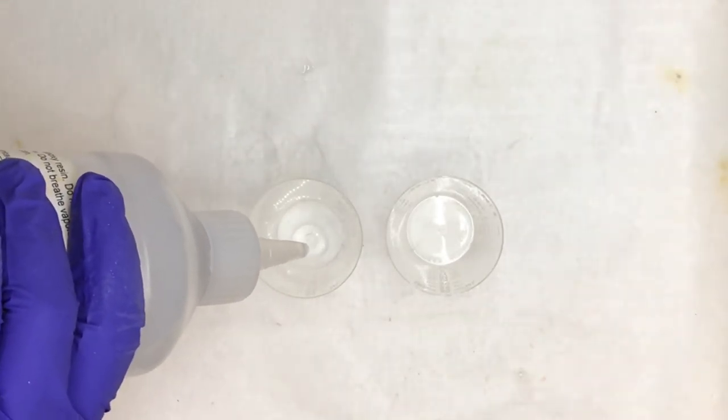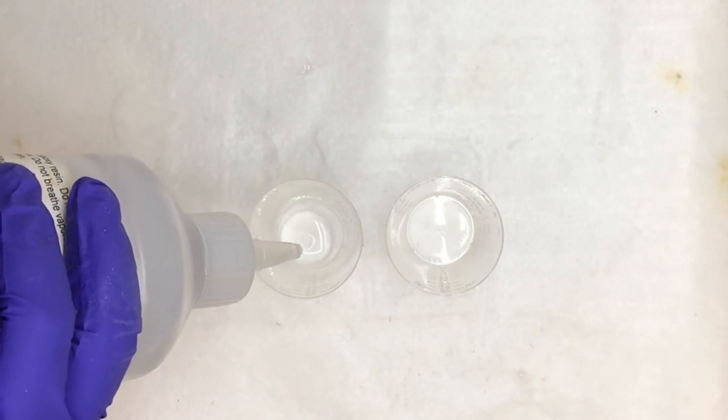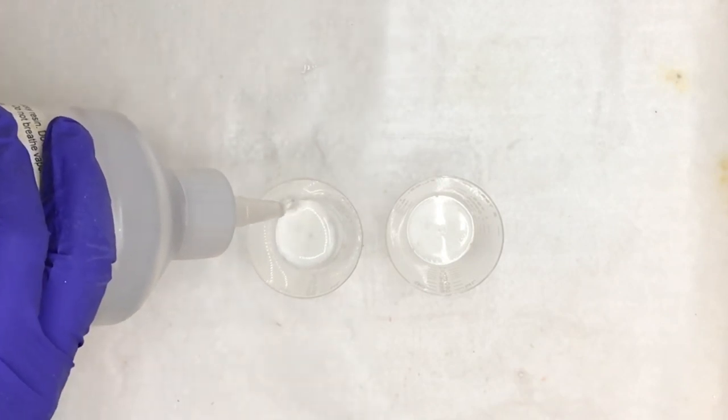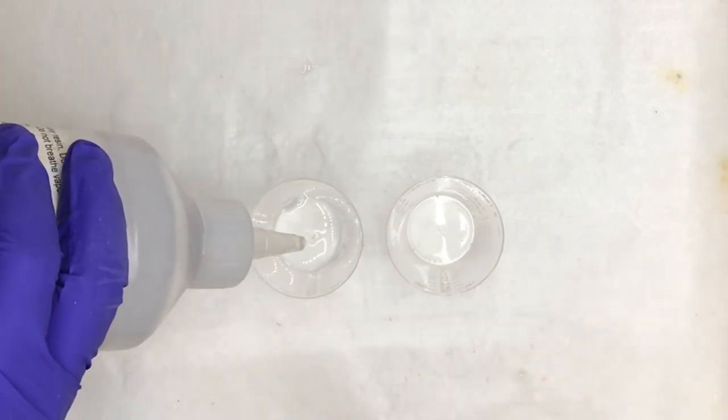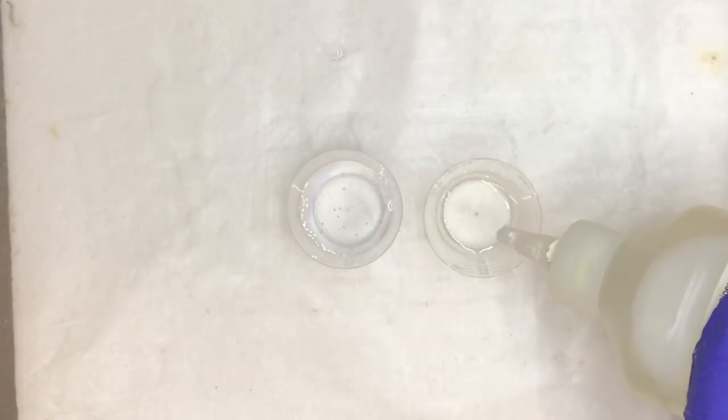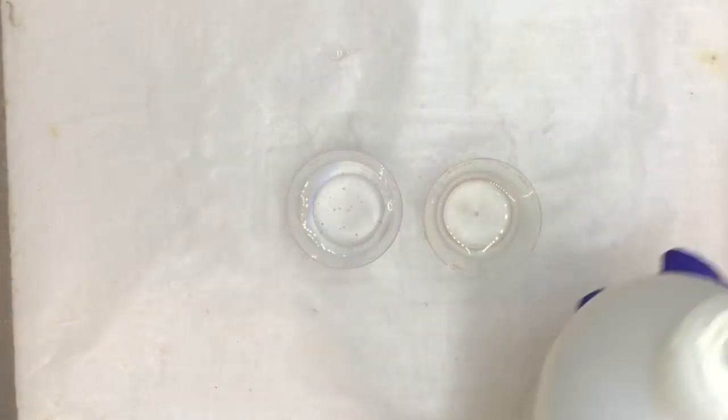Next, you want to make sure to measure your resin and hardener in separate cups according to the kit instructions. What you can't see here is that I'm kneeling down so that I'm looking at the cups at eye level. Yes, you need to get as precise a measurement as possible.